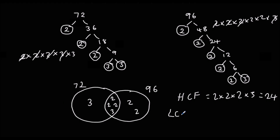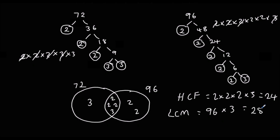And the lowest common multiple is all of the numbers multiplied together. So we've got 96 — since 2 times 2 times 2 times 2 times 2 times 3 makes 96 — times the remaining 3. So 96 times 3. You might need a calculator for that one. The answer is 288.